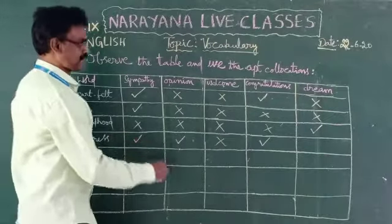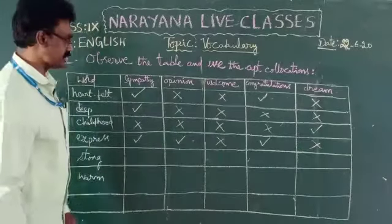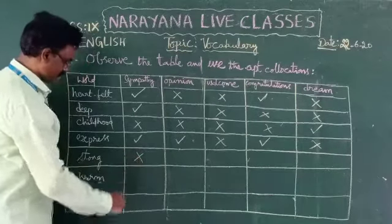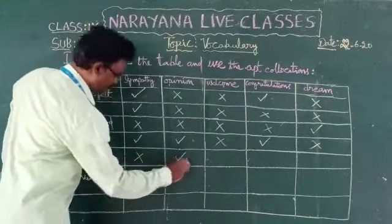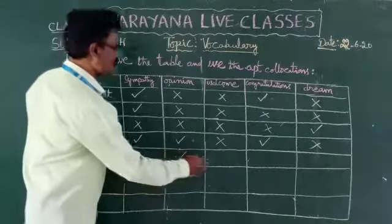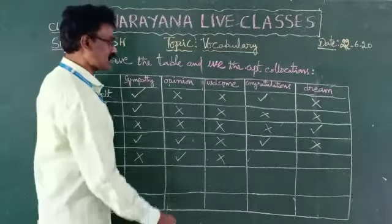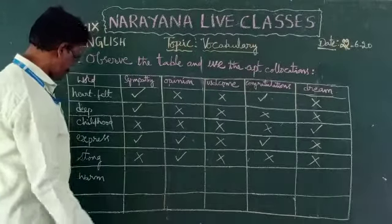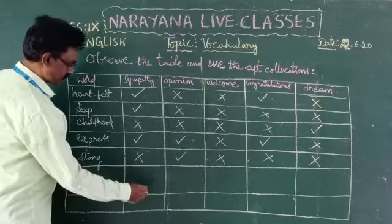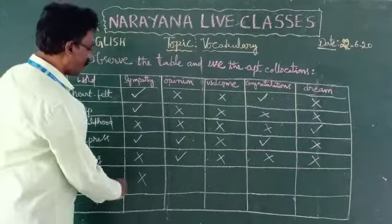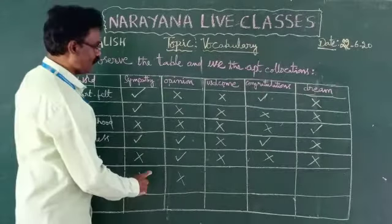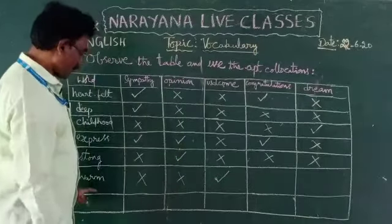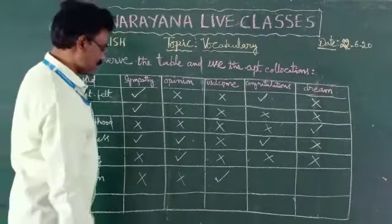Express dream — not right. 'Strong': strong sympathy — not right. Strong opinion — yes, right collocation. Strong welcome — not right. Strong congratulations — not right. Strong dream — not right. Then 'warm': warm sympathy — not right. Warm opinion — not right. Warm welcome — just like hearty welcome, it is a right collocation. Warm congratulations — not right. Warm dream — not right.